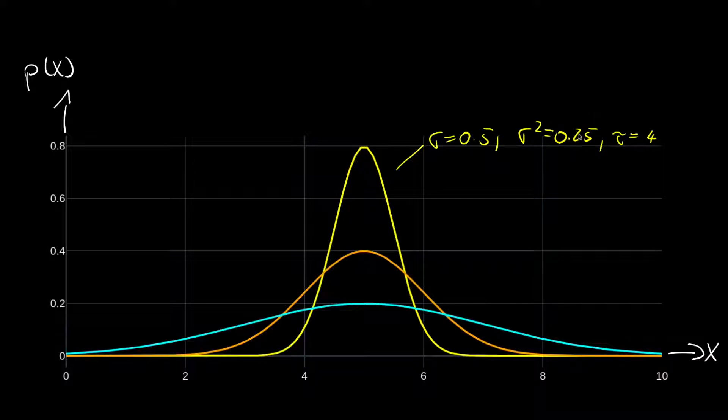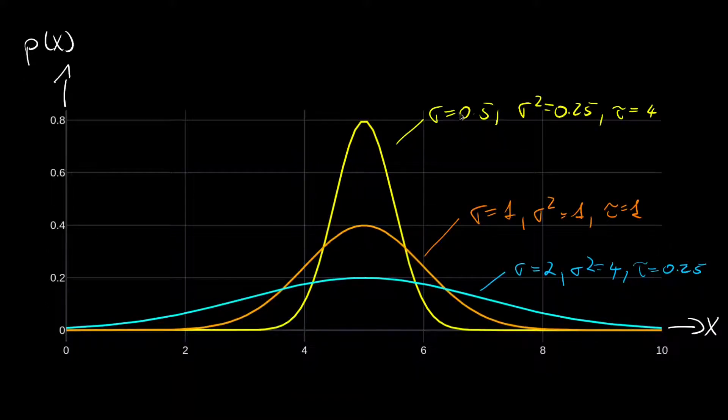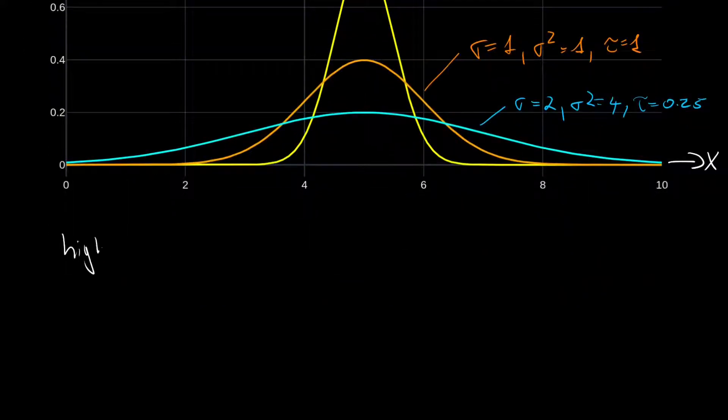Since the variance is 1 over 4, then we have the standard normal with a standard deviation of 1, a variance of 1, and also a precision of 1. And then lastly we have a wider normal with a standard deviation of 2, a variance of 4, and the precision of 0.25 or 1 over 4.